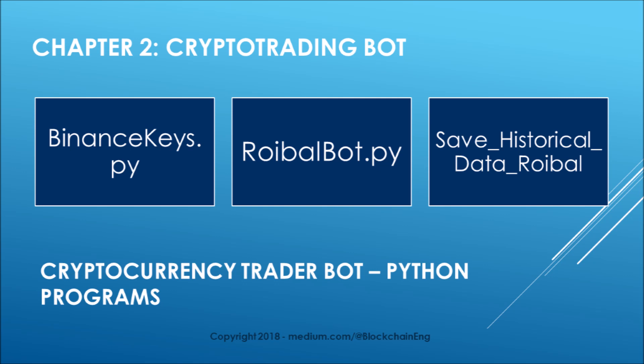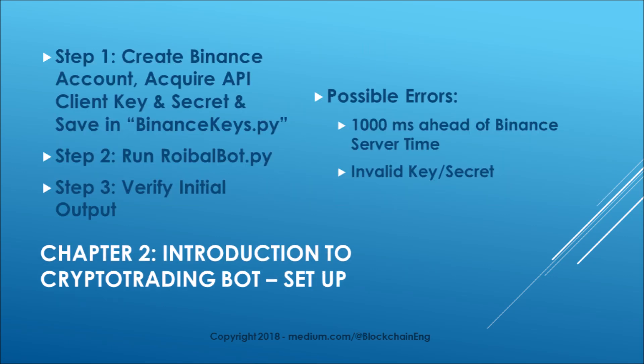We will be discussing three major Python programs today: binancekeys.py, rooiballbot.py, and save_historical_data, which was also modified. These three files are in the examples fork of the GitHub repository. To get this working on your local machine, the first step is to create a Binance account, get the client key and secret key, and save it in binancekeys.py. From there you run rooiball.py.